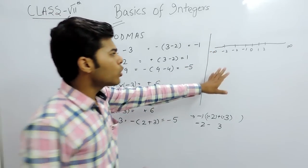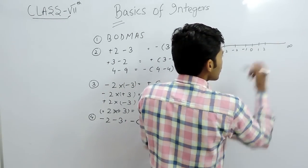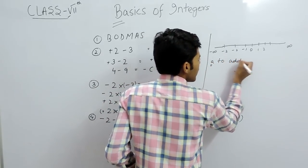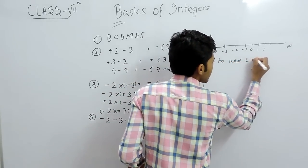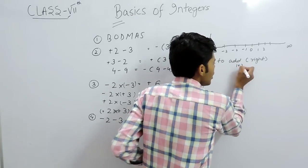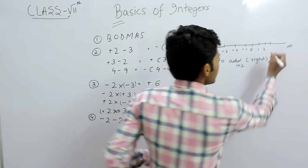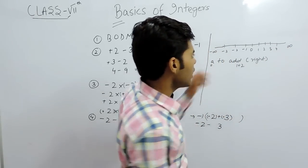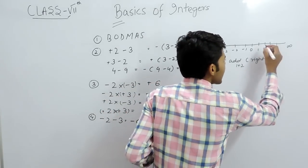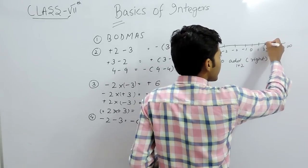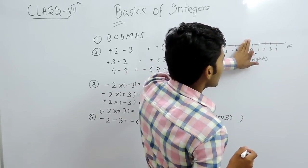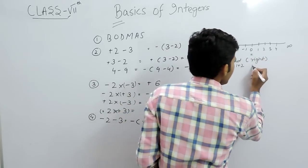To add on a number line, we move to the right. For example, for 1 plus 2, we mark the first point at 1, then move 2 steps to the right. Counting from 0 as the base value, the answer is 3.